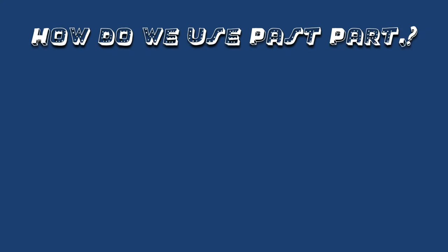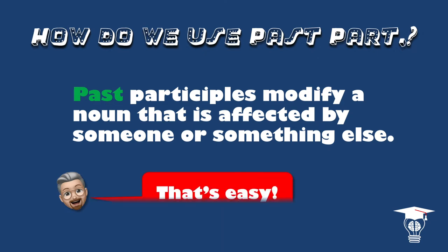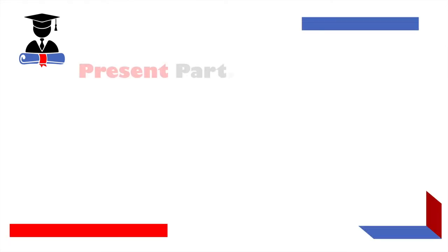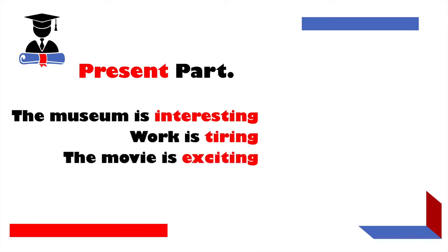So how do we use past participles? Past participles modify a noun that is affected by someone or something else. Let's take a look at some examples. With present participles we say: the museum is interesting, work is tiring, the movie is exciting.